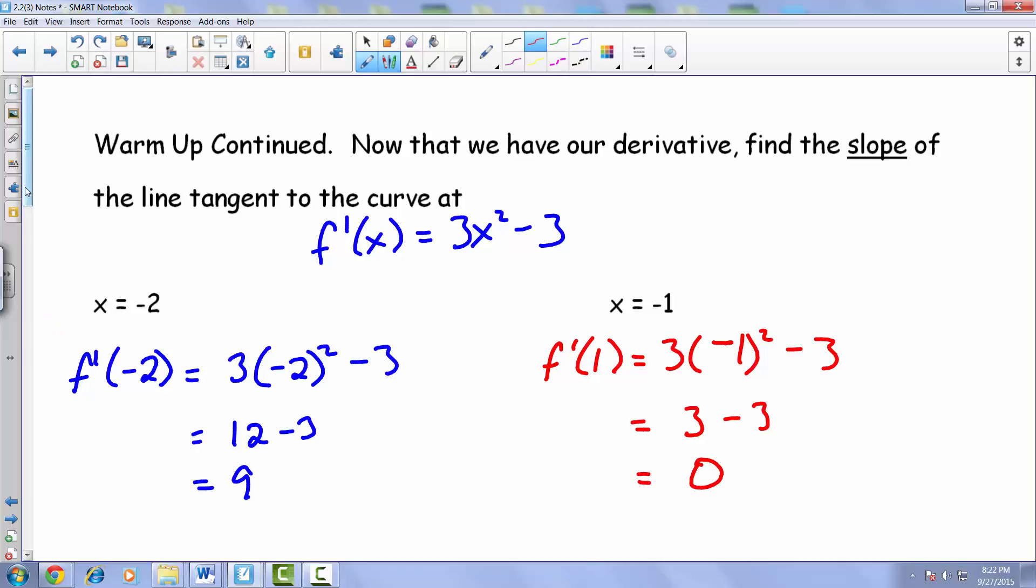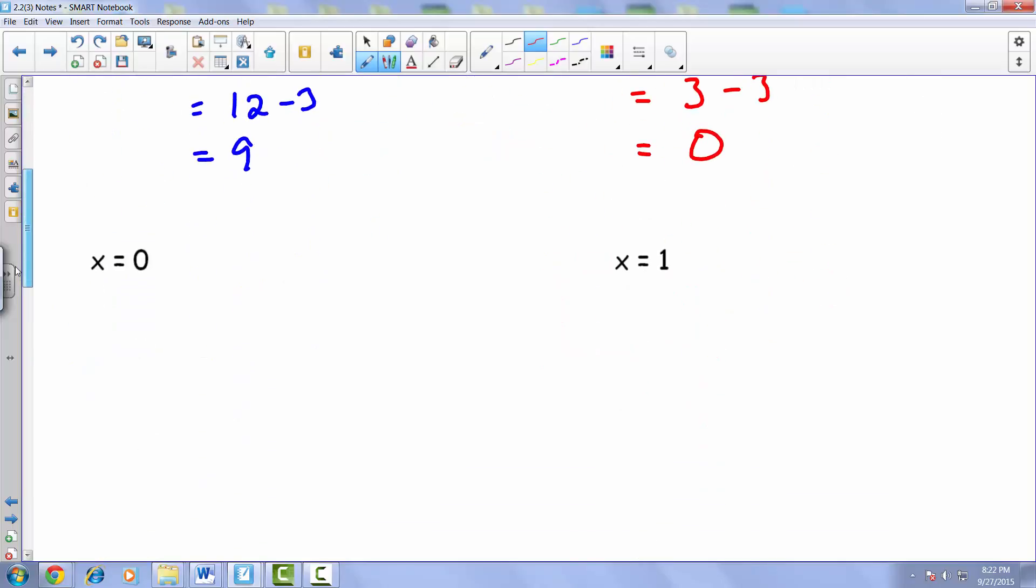The next one, we end up then with throwing 0 into the function. So we have f prime of 0 is equal to 3 times 0 squared minus 3. 0 squared is just 0, times 3 is still just 0. So it looks like it comes out to be negative 3.